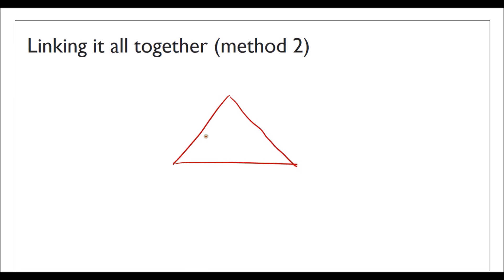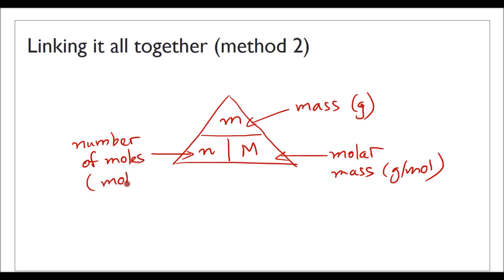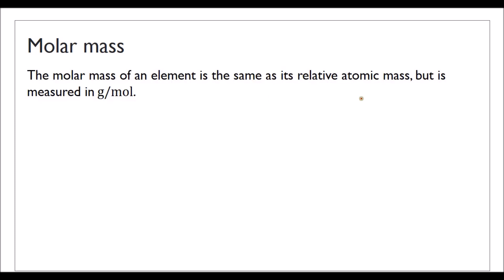You can also translate this into a triangle, though I don't normally use a triangle because it doesn't work for all cases — I prefer one method that works all the time. In the triangle: mass in grams is on top, molar mass in grams per mole is on one side, and number of moles is on the other. Just cover what you need to find and that gives you the formula. The molar mass is the same as the relative atomic mass but measured in grams per mole, so you can find the molar mass of every element from the periodic table.